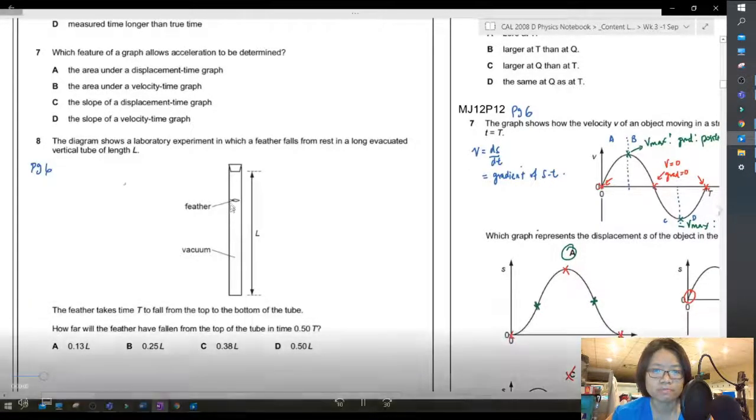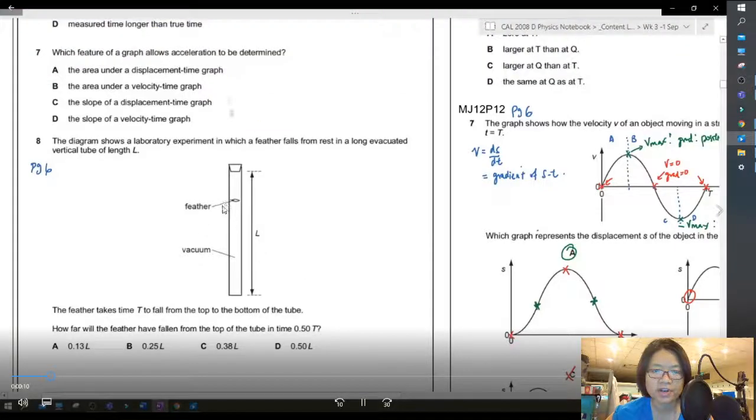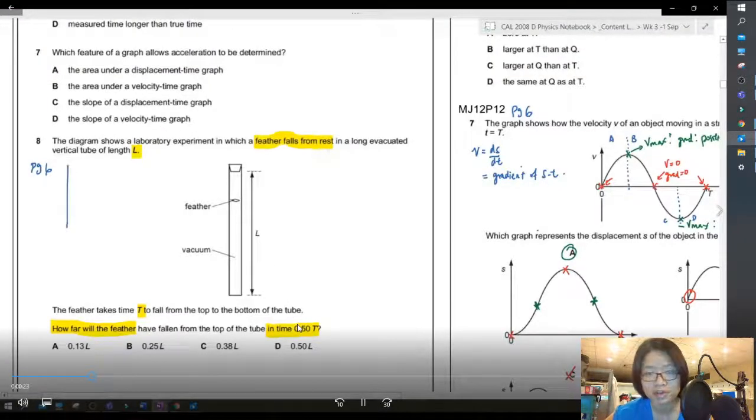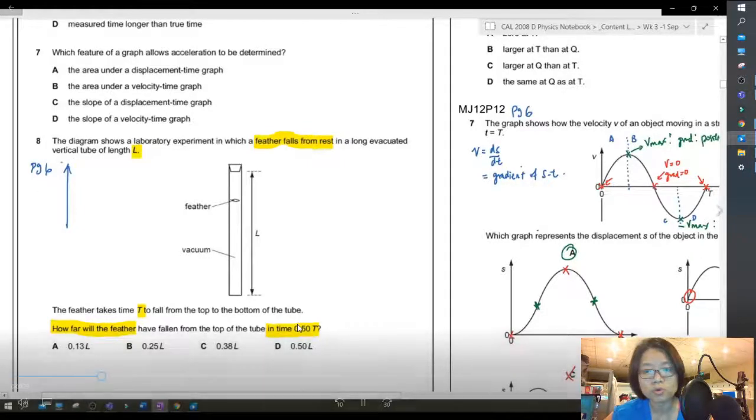Here you have a tube where there is a feather falling inside the tube. The tube is length L and the feather takes time t to reach the bottom. How far would the feather have fallen half in half of the time, 0.5 t? So there are a few ways to do this and I will show you both ways.